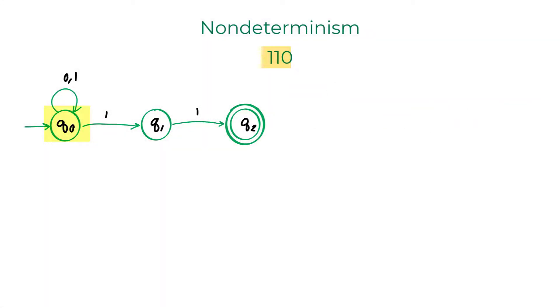Now, we are just left with this machine, which is not in the accept state after reading the whole input string. Hence, we can say that the given NFA rejects the given string 1, 1, 0.